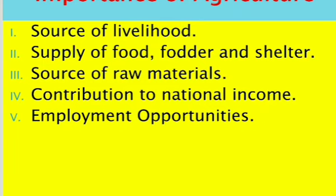Forestry products are also a source from agriculture. As a source of raw materials, crops like cotton and jute come from agriculture and are supplied to major industries. Agriculture is also the main source of national income for most developing nations. This vast field of science provides great employment opportunities for almost all labor force, which helps reduce high rates of unemployment.